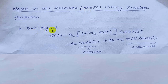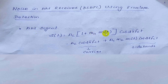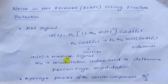The AM signal is given by S(t) = AC × (1 + MA × M(t)) × cos(2π fc t). The first term AC × cos(2π fc t) corresponds to the carrier, and the second term corresponds to the lower and upper sidebands. Here M(t) is the message signal and MA is the modulation index, which is used to determine the percentage of modulation.